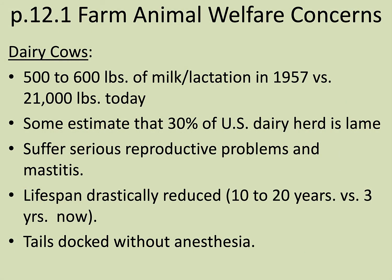Dairy cow welfare concerns: cows used to produce 500–600 pounds of milk in 1957 — roughly 70 gallons. Today some animals are producing 21,000 pounds during their lactation cycle — a phenomenal difference in just 60 years. Along with that, it's estimated that 30% of the U.S. dairy herd is lame, and there are serious reproductive problems and mastitis. The average age of a cow producing that much milk is about three years, after which their liver and other organs are essentially worn out.